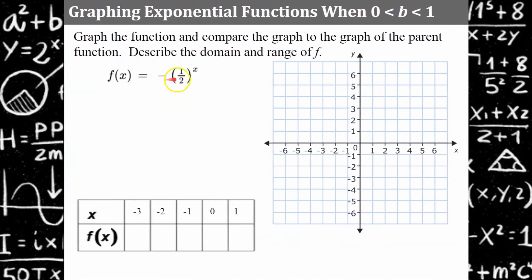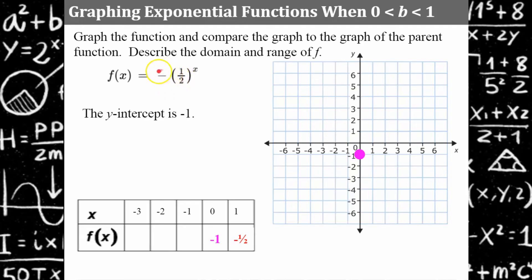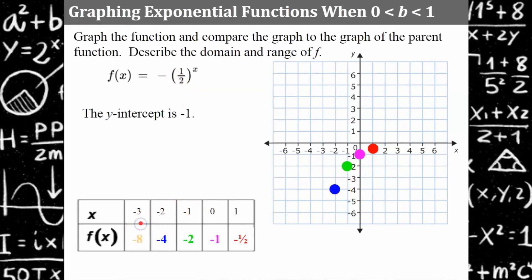Let's try another one when our base is a fraction. I'll graph this function, then describe the transformation and domain and range. The y-intercept is negative one — there's an invisible 1 here, the base is one-half, and the a factor is negative one because of the negative sign. I graph the y-intercept, evaluate for x equals 1 to get negative one-half, and for x equals negative 1, one-half to the negative one is two, times negative one gives negative two.